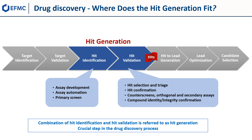Where does hit generation fit in the drug discovery process? This slide gives an expanded view of the drug discovery process, from target identification until candidate selection, and shows where hit generation fits in this sequence. After target identification and validation, hit generation occurs. Hit generation can be split into two distinct stages: hit identification and hit validation. In the hit identification stage, it is necessary to invest in assay development and assay automation to secure a reliable and robust primary screen to identify the initial hits. In the hit validation stage, hit selection and triaging occurs — hits obtained need to be confirmed through counter screens, orthogonal and secondary assays, and the identity and integrity of hit compounds must be confirmed through analytical methods. The combination of hit identification and hit validation is referred to as hit generation, and this is a crucial step in the drug discovery process.